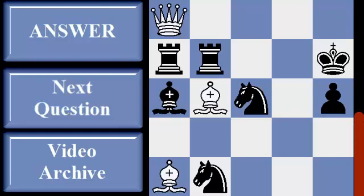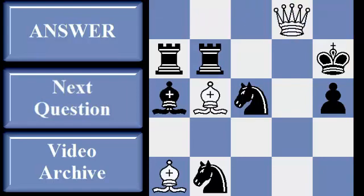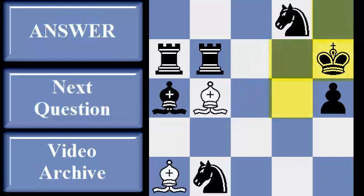Weave a mating net. Examine most forced moves. First checks, then captures, and attacks on pieces. If you need more time, pause the video. Forcing knight takes g8 limits the king's space to just two diagonals.